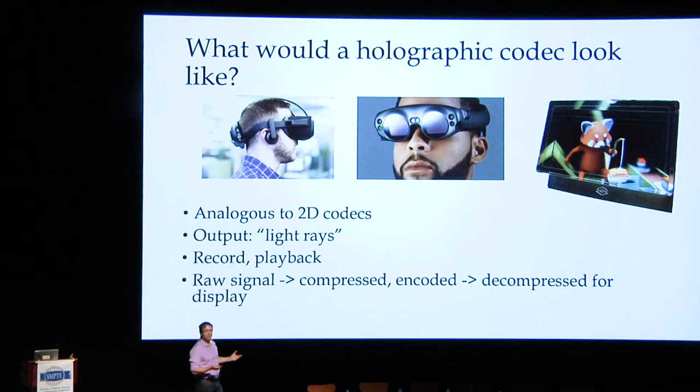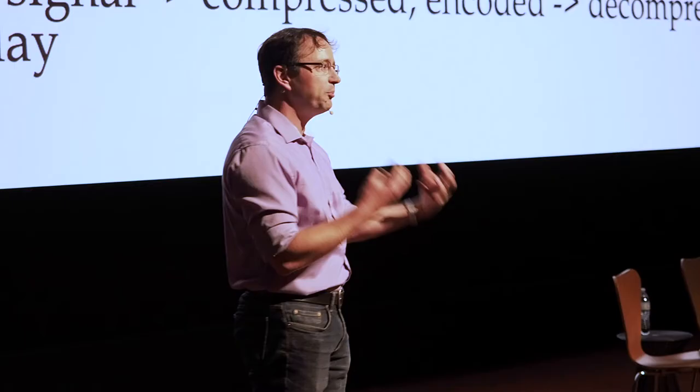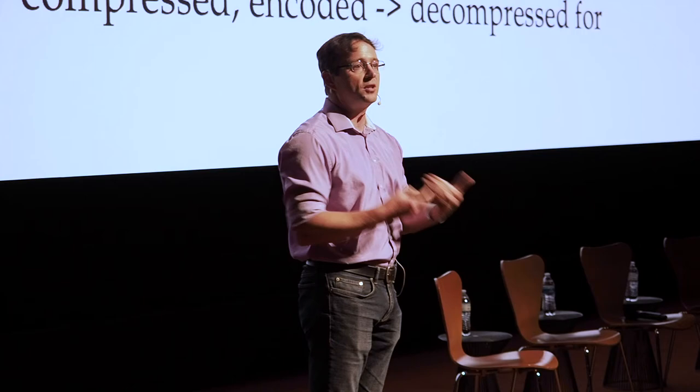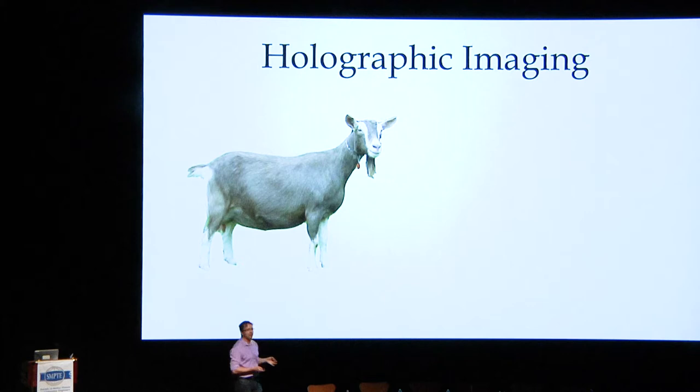For light fields, if we were to do that, we'd want a really similar technique. You would want to have a signal of interest, record it, compress or manipulate it, and then be able to play it back. This seems fairly straightforward — to me that's the minimum threshold for a codec. It turns out it's actually really hard for holographic images, as Ariane alluded to.